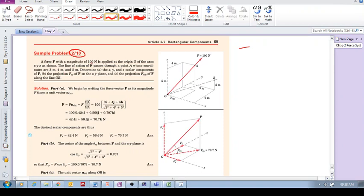A force F with a magnitude of 100 N is applied at the origin of the axes x, y, z shown. The line of action of F passes through a point A, whose coordinates are... What are the coordinates of that point? Well, what are coordinates? It just tells us how far do you move in the x, in the y, and the z. So it's 3, and this one is 4, and then you go up 5. So 3, 4, 5. That's its coordinates there. Let's write it in: 3, 4, 5 in meters.